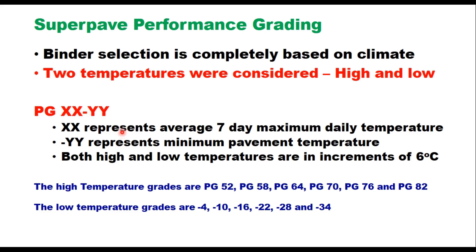The PG — Performance Grade — is assigned as PG XX-YY, where XX represents the average 7-day maximum daily pavement temperature and minus YY represents the minimum pavement temperature. Both high and low temperatures are in increments of 6°C. The high temperature grades are PG 52, 58, 64, 70, 76, and 82. The low temperature grades are -4, -10, -16, -22, and so on.